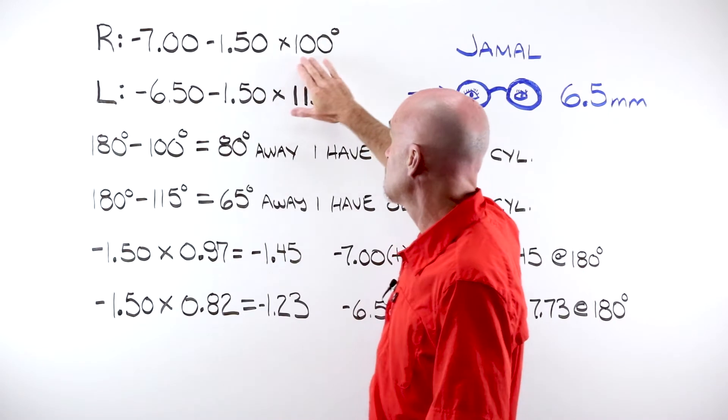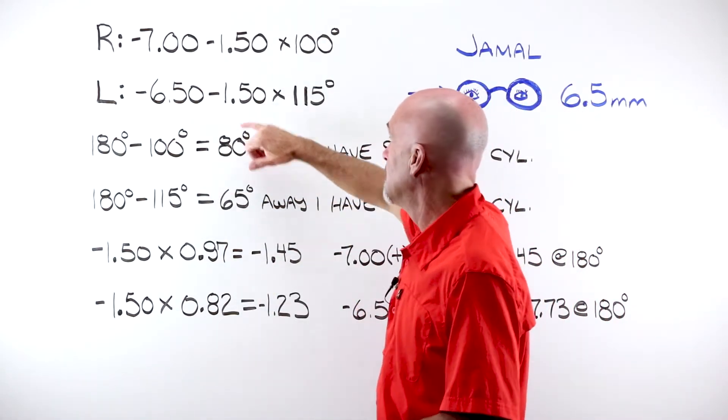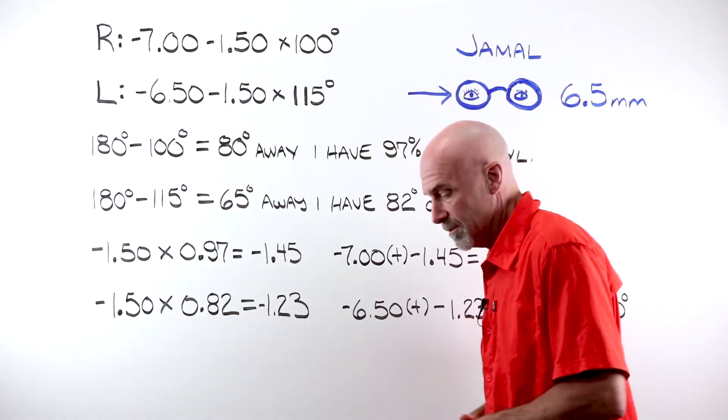He's got a minus seven, minus 150 at 100, and a minus 650, minus 150 at 115.